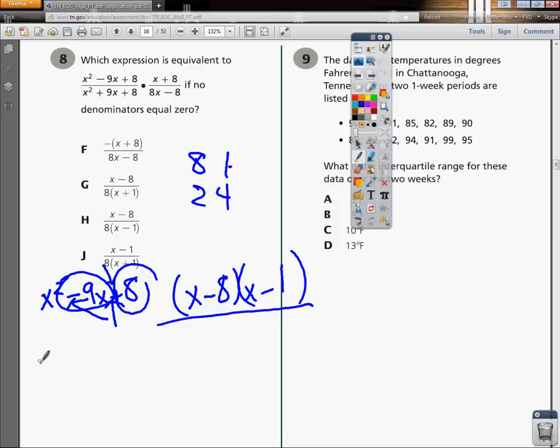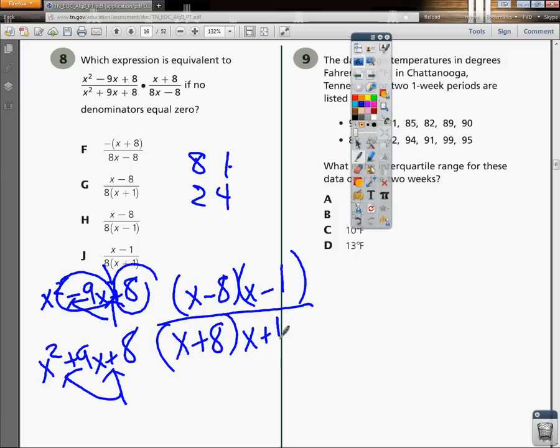On the bottom, I've got the x squared plus 9x plus 8. It's the same exact sequence except for the fact that this tells me they're going to be the same, but this sign tells me they're both going to be plus. So I'm going to do x plus 8 and x plus 1. If this 9 had been negative like it is before, they'd both be negative.